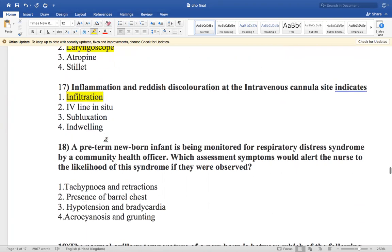Now the next question is: a preterm newborn infant is being monitored for respiratory distress syndrome by a community health officer. Which assessment symptoms would alert the nurse to the likelihood of this syndrome if they were observed? In respiratory distress syndrome, mainly in the preterm newborn, tachypnea and retraction will be present.